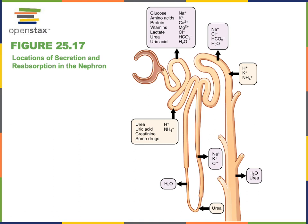Several substances are secreted into the filtrate to be excreted from the body in the urine. Nitrogenous wastes like urea and ammonia, which come from the breakdown of protein, are secreted into the filtrate and then excreted from the body in the urine.